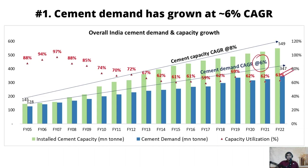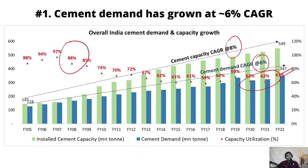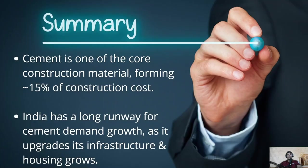When we look at demand growth, it has been fairly steady — barring years around elections when demand gets impacted. Because supply has grown faster than demand, utilizations have dropped from around 80-85 percent levels to 60-65 percent levels. The reason companies have consistently added supply is the expectation that going forward demand growth is going to be more than 6 percent. Broad summary: cement as an overall raw material is one of the core raw materials for any civil construction, forming around 15 percent of the cost, and India has a runway for growth.